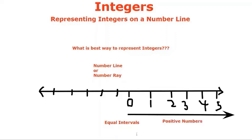On the left side of the number line, we mark the negative numbers which are -1, -2, -3,